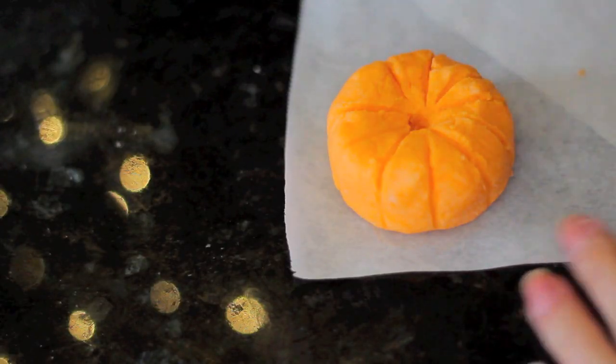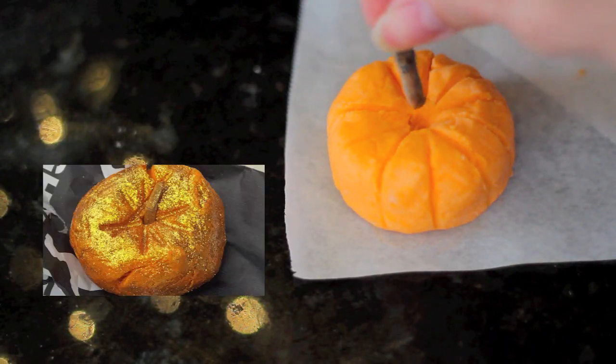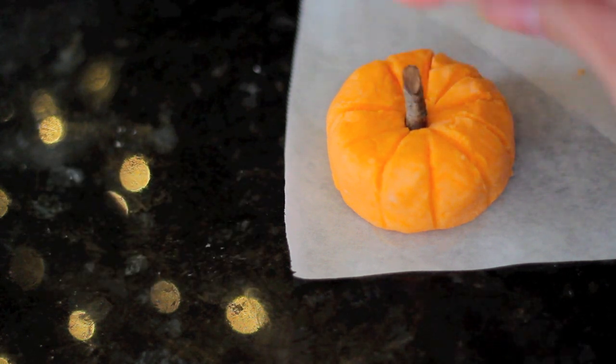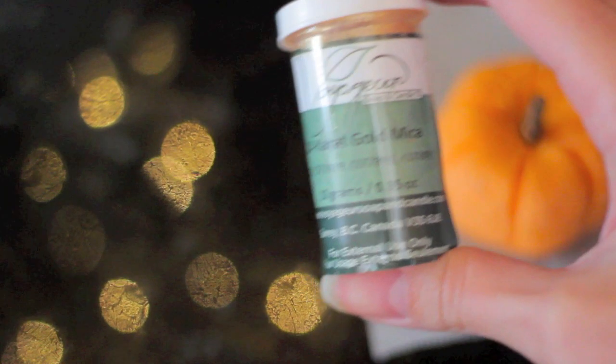The one at Lush actually only has four or eight lines on the top, so it does look like a pumpkin, but you can make this one look even better. They also have a cinnamon stick on the top as a stem.